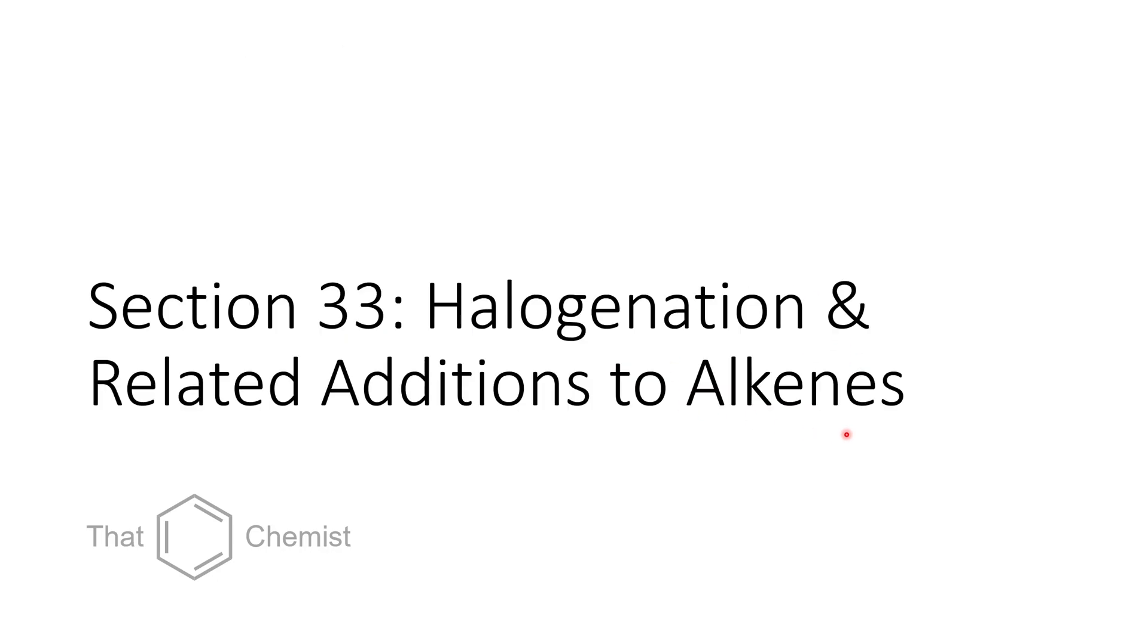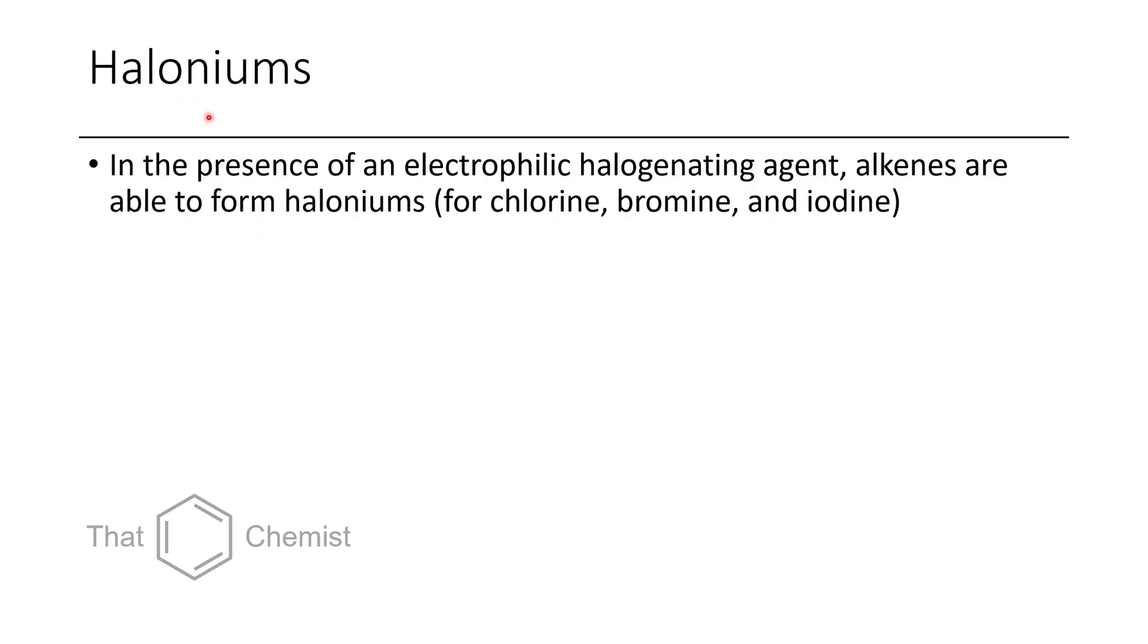So with that, let's get to today's material, halogenation and related additions to alkenes. So a halonium can form in the presence of an electrophilic halogenating agent when it reacts with an alkene. This is typically seen for chlorine, bromine, and iodine.